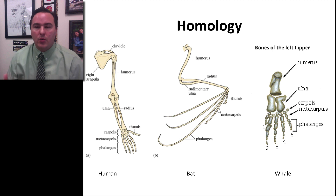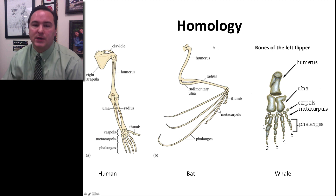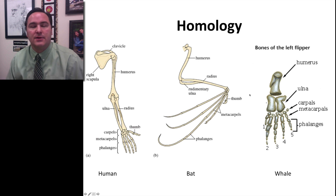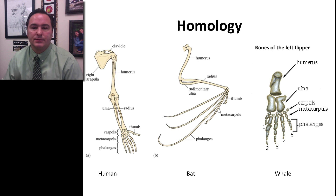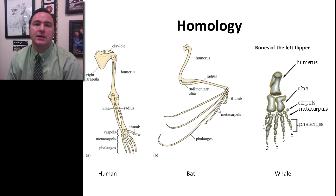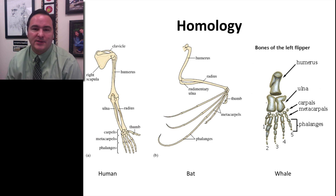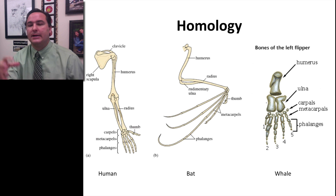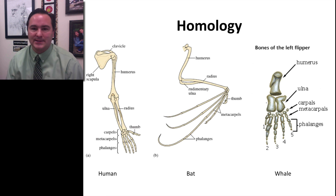How do we explain the fact that all of these organisms have this same structure — one bone, two bones, small bones, digits? The best explanation is evolution. Within the creationist alternative explanation, perhaps that's the way the deity decided each one needed to look, but there's not a real good reason for why it's that way.